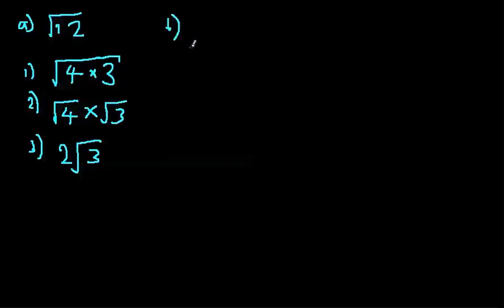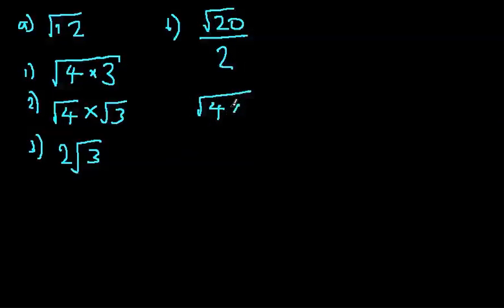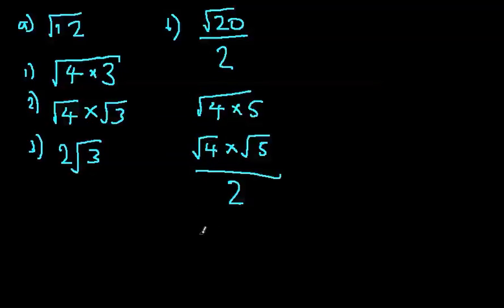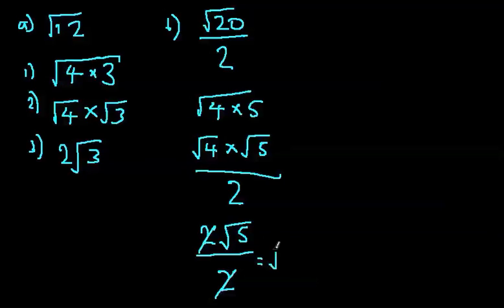Let's do part B now. Square root of 20 over 2. First, like we did here, we're going to simplify this. So root 20, square number, I'm going to take 4 again. So 4 times 5, this equals root 4 times by root 5, all over 2. Once we do this, root 4 is 2 root 5, because root 5 is just root 5, still over 2. And then the 2 and the 2 divide, and we get root 5, which is simplified from there.